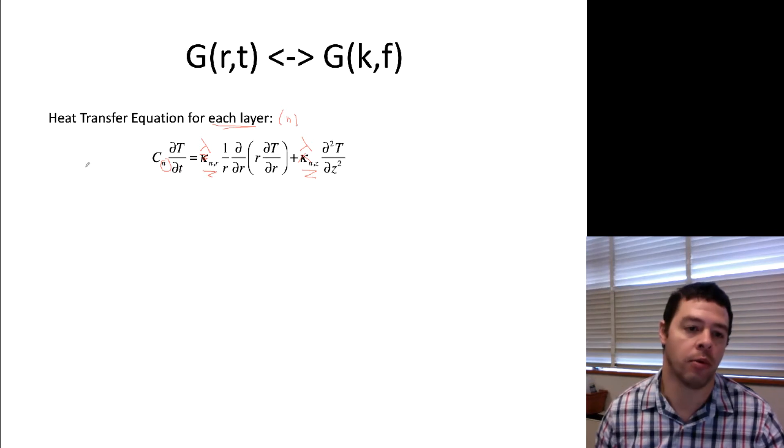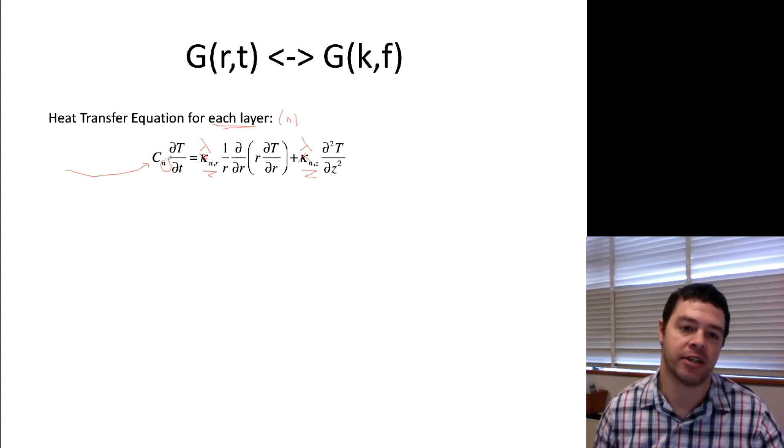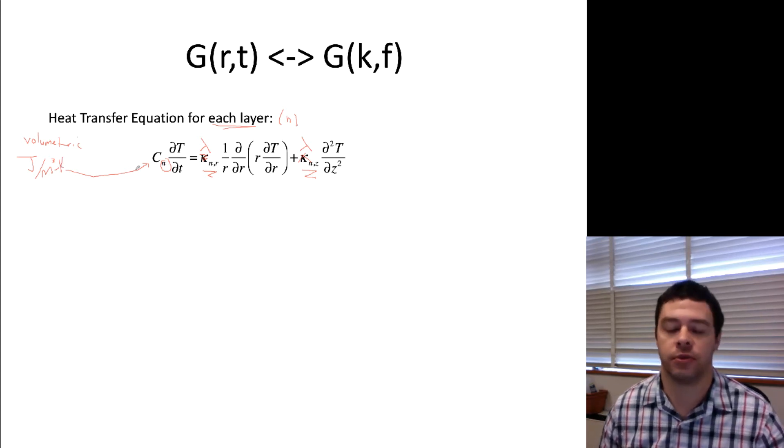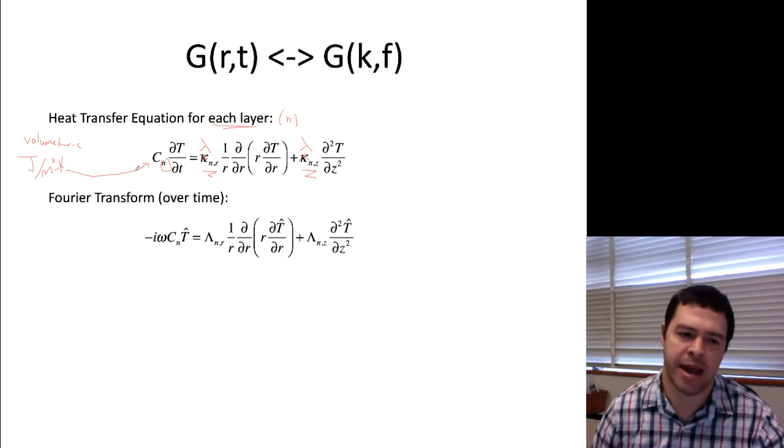One other word of warning here is that if I write heat capacity, some people may be turned off by the way I've written this because the heat capacity or the specific heat capacity written here would be volumetric heat capacity, not the constant volume heat capacity, but a volumetric heat capacity, which means that the units would be joules per meter cubed kelvin. So just a word of warning. If you have it in mass-based units, you'll have to multiply by the density.